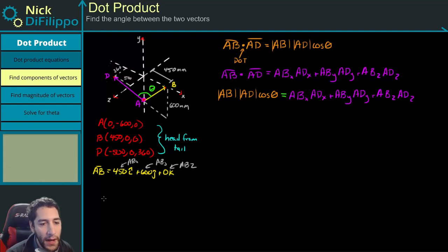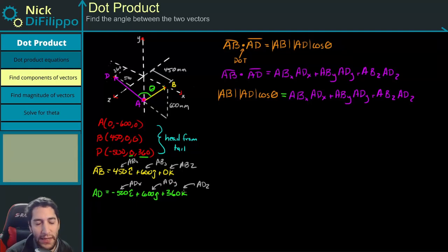Now let's do my position vector AD. So if I have AD, this is going to be equal to, same thing, head minus tail. So the head is at D, the tail is at A, so I'm going to have minus 500 minus 0, so minus 500i, then 0 minus a minus 600, so plus 600j, and then 360 minus 0, so plus 360k. And again, that's what I get. This is ADx, this is ADy, this is ADz. So again, I'll just plug them in over here when the time comes.